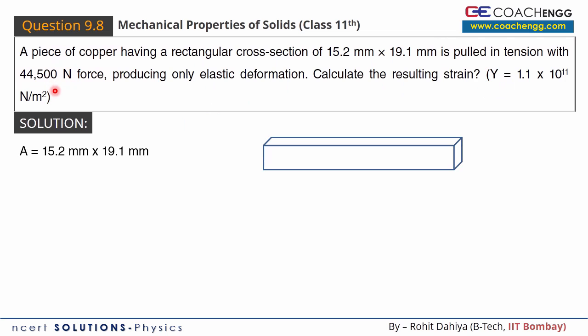So we have two ends with equal and opposite force, which means the length will change, producing only elastic deformation. When we have elastic deformations, we can use Hook's law, Young's modulus, which is the stress upon strain ratio.